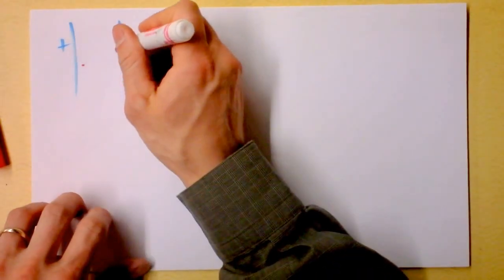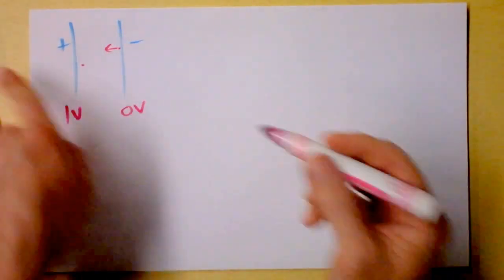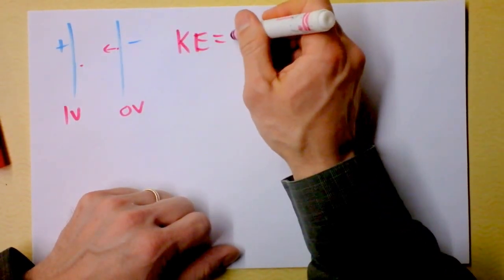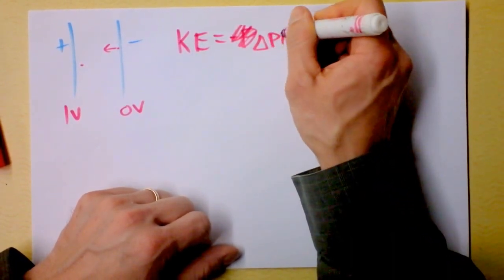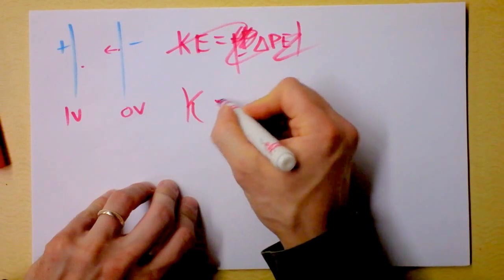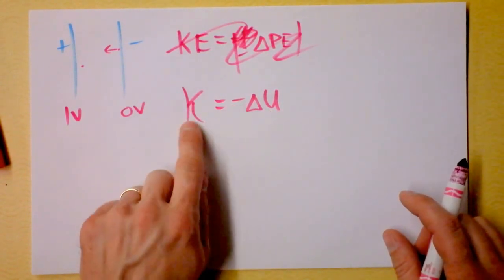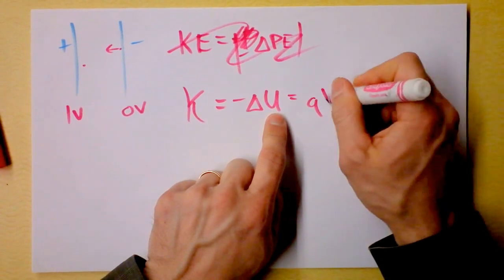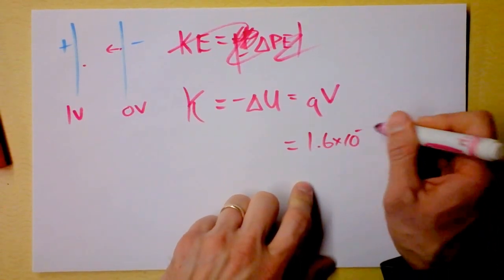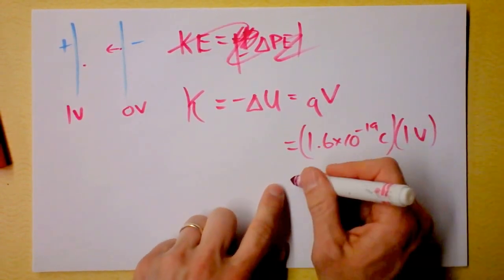I'm going to give you a parallel plate capacitor with an electron sitting over here on one side. I want to accelerate it through one volt, so this side is zero volts and this side is one volt, and I want the electron to go that way. Its kinetic energy is the opposite of its change in potential energy — K equals negative delta U. If we're losing potential energy, we take the opposite of that and get some positive kinetic energy. The change in energy is the charge times the voltage. The charge is 1.6 times 10 to the negative 19th coulombs, and the voltage is 1 volt. Multiplying those together gives an answer in joules.